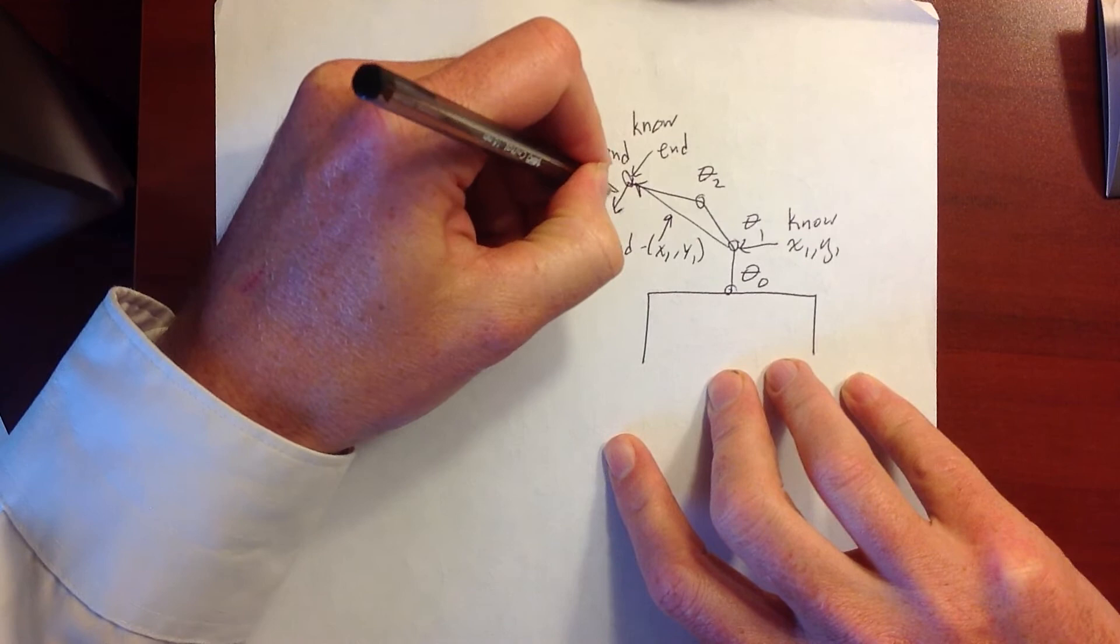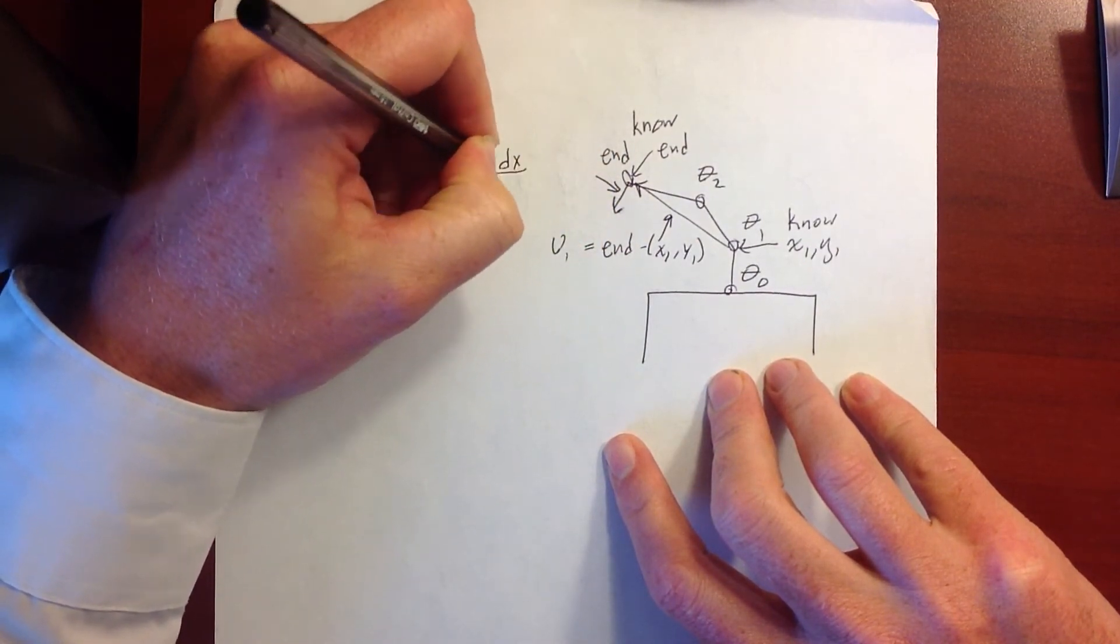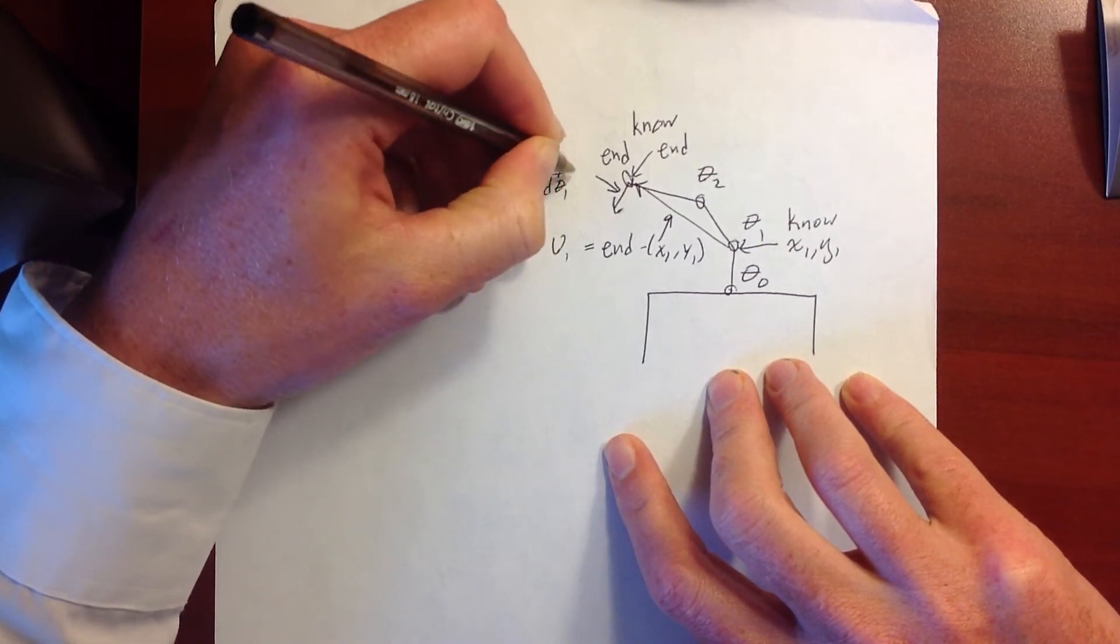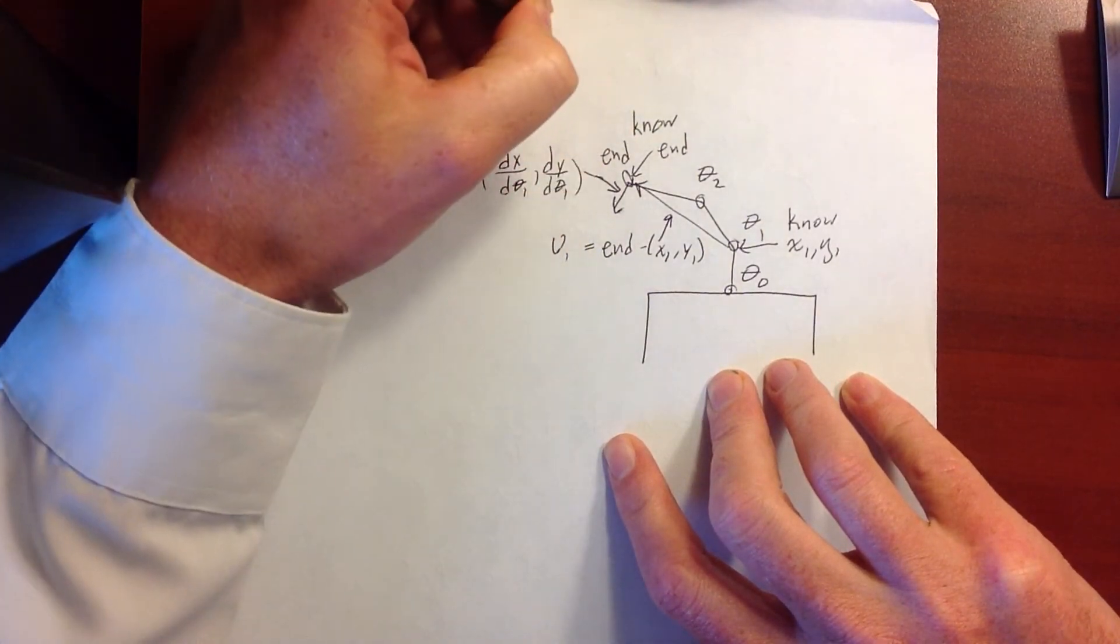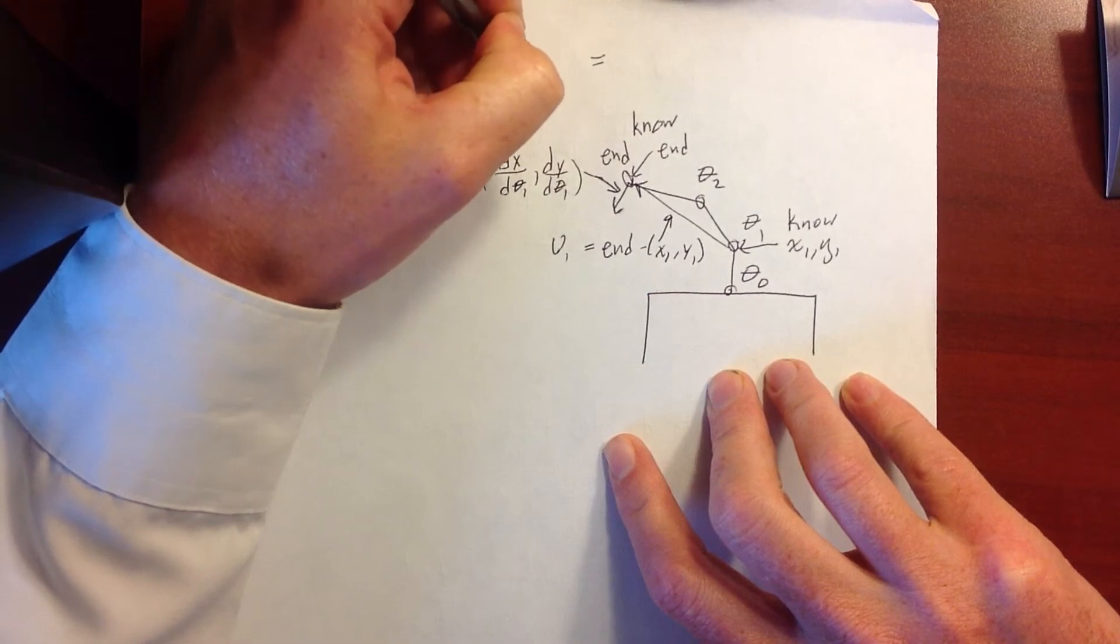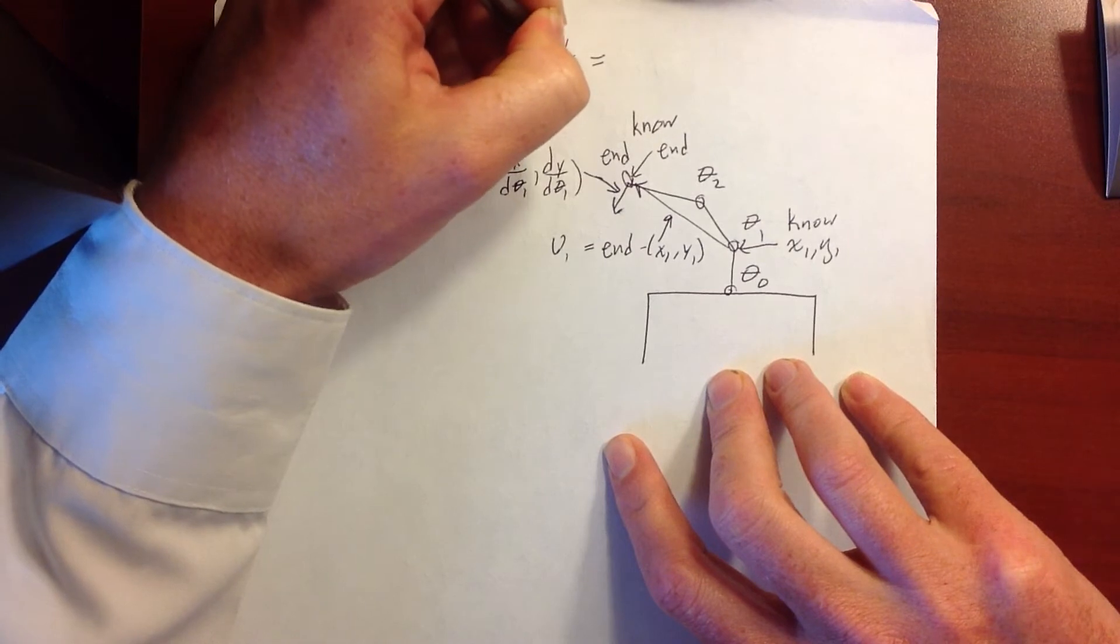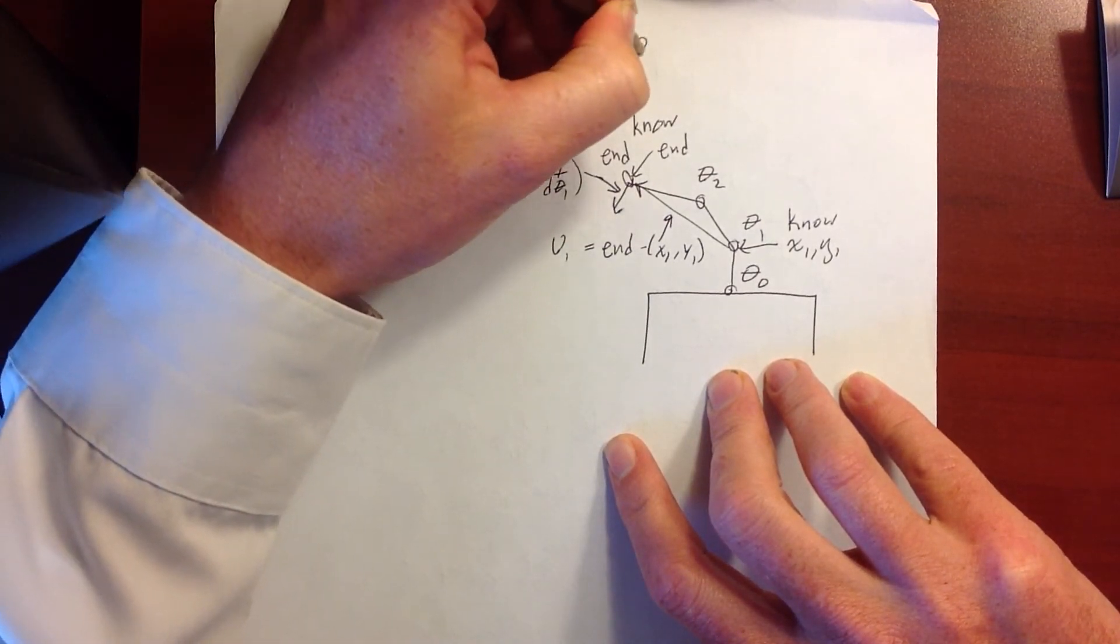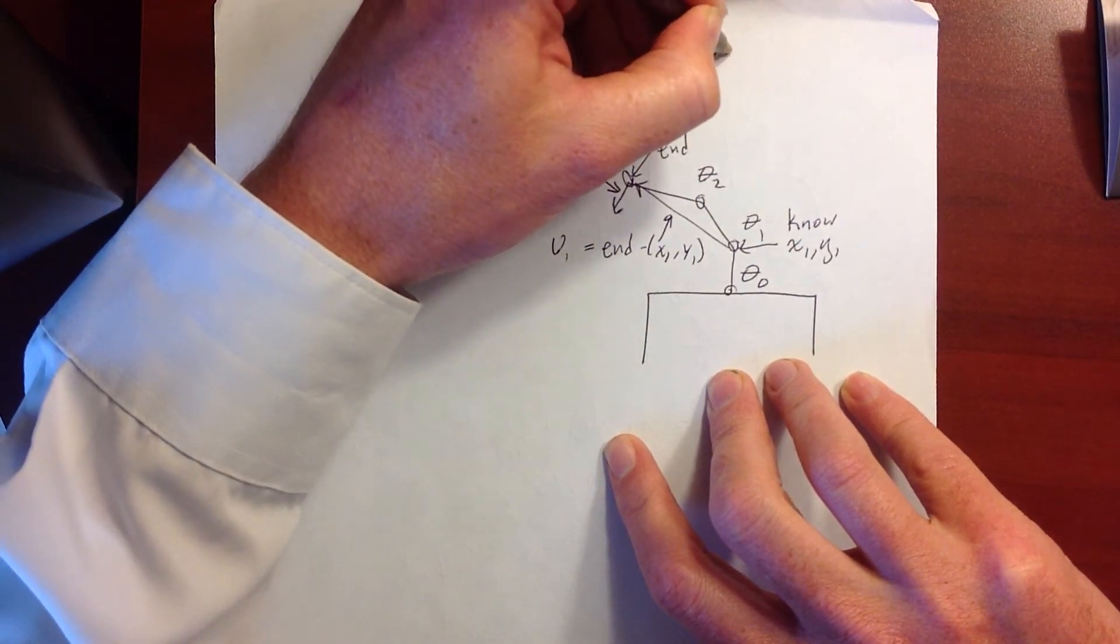So this vector right here, which is actually dx d theta1, comma dy d theta1. So that vector right there is going to be given by, so I have dx d theta1, comma dy d theta1 is equal to the cross product of 0, 0, 1 crossed with v1.